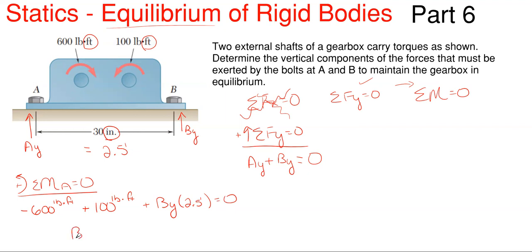So it would be By times 2.5 feet is equal to zero. When you rearrange, By is just going to be 600 minus the 100 divided by the 2.5, and that gives me a total for By to be a positive 200 pounds. Since it's positive as my answer, that means my assumed arrow direction at the start of up was the correct one. So B sub y is the one that is going upwards.